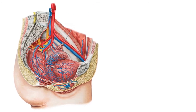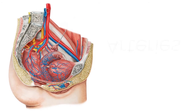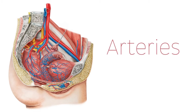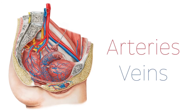First we're going to look at the arteries that supply the structures found in the pelvis. These structures include the pelvic viscera, the pelvic walls and floor, and some structures in the perineum. Then we'll have a look at the veins that provide the venous drainage of the pelvis. The blood vessels of the female pelvis are pretty similar to the male pelvis, with exception to those that supply the genitalia.